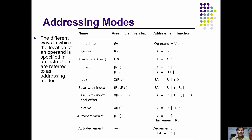First, we will see immediate addressing mode. Immediate addressing mode represents the value directly taken from an input device. In assembly language, the syntax is: before the value, you prefix the hash symbol (#). That represents the processor can access the data directly from the value. For example, #1234 means the processor accesses directly from the input device or value.